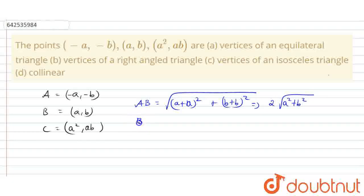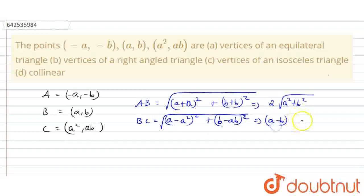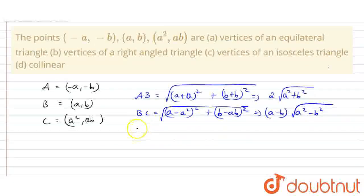Next, I am going to find the distance of BC. So BC equals the square root of (A - A²)² + (B - AB)². If we solve this, we can take out (A - B) as a common factor, so the remaining term gives BC = (A - B)√(A² + B²).